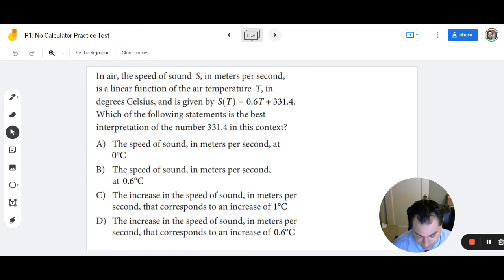Number 8. In air, the speed of sound S in meters per second is a linear function of air temperature, T, in degrees Celsius, and is given by S of T equals 0.6T plus 331.4. Which of the following statements is the best interpretation of the number 331.4 in this context? So an understanding of the slope intercept form, we can see that 331.4 is the y-intercept. Well, what needs to be 0 in order to have the y-intercept? That would be T. So the temperature needs to be 0. Now I looked at the answer choices and I said, there's only one that has 0 anyway. And is it temperature? It is. So A is the answer.